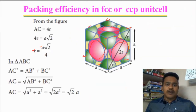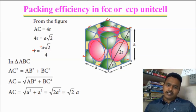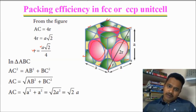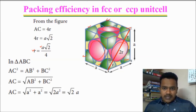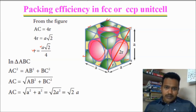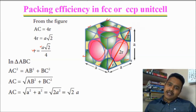To find out A, I have to observe only one face — any face. While observing this face, there is a face diagonal. I will mark it here. In this face diagonal, how many atoms are there? Part of one atom is at one corner, part of one atom is at the center, and part of one atom is at the other corner.